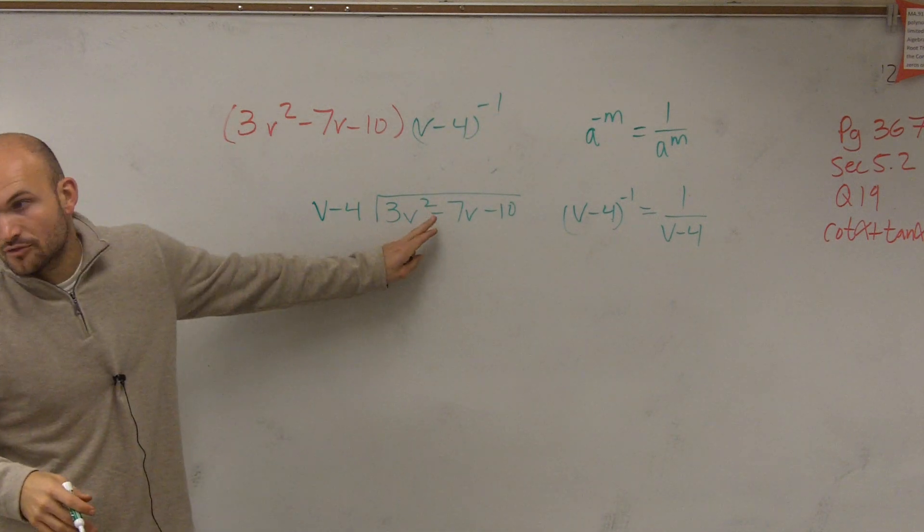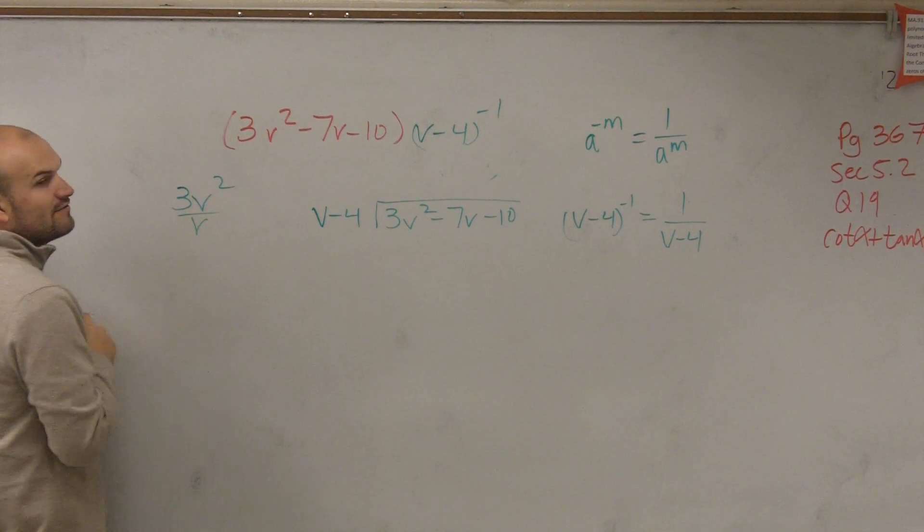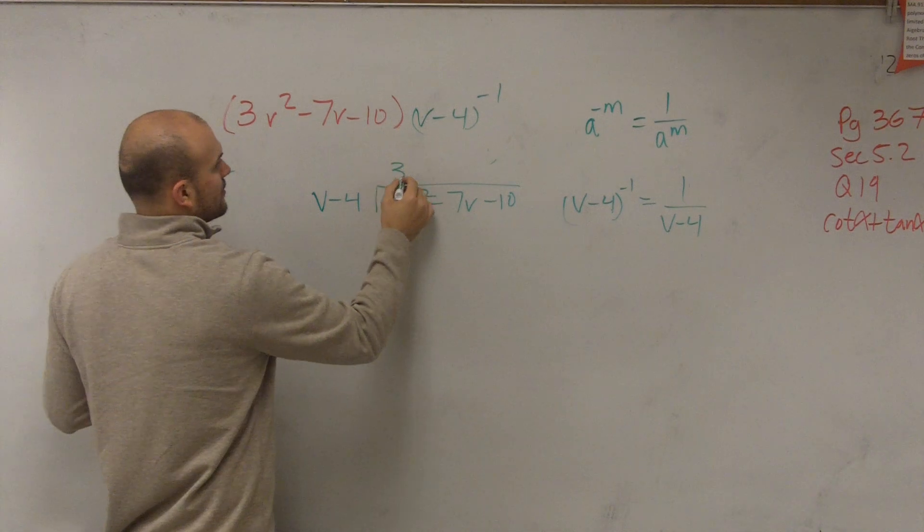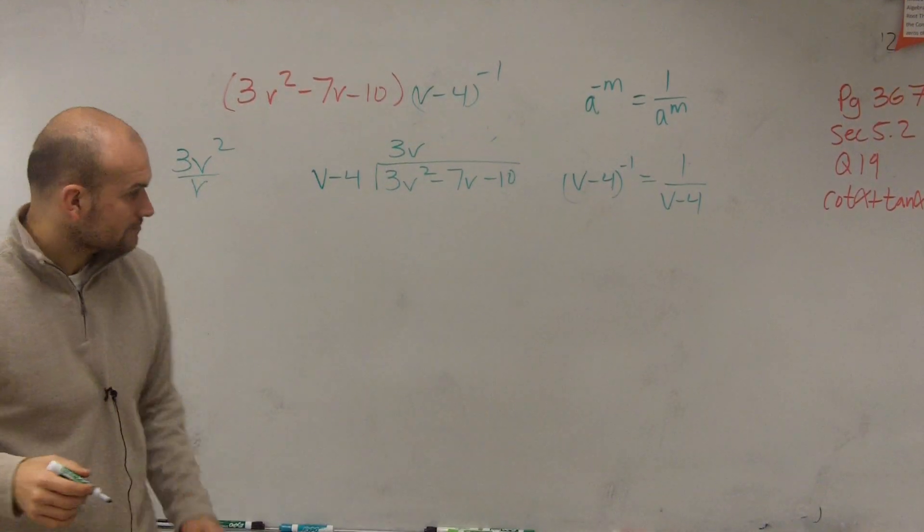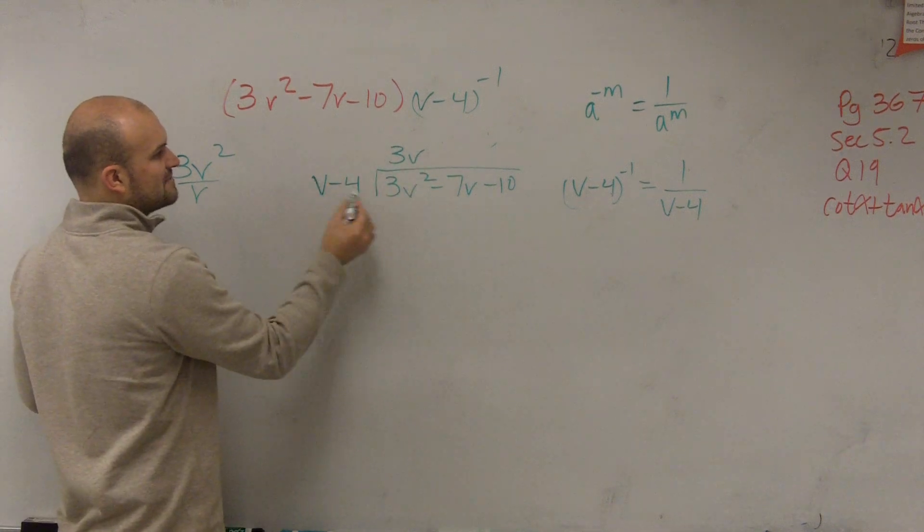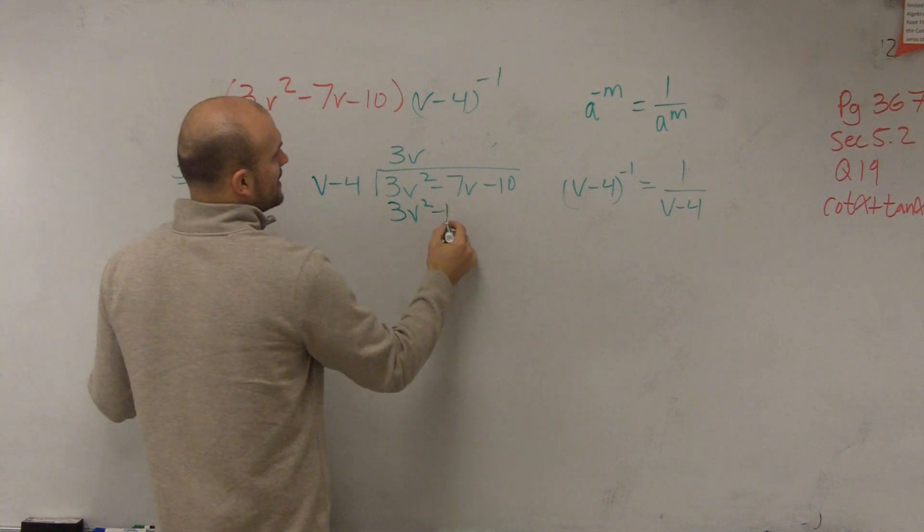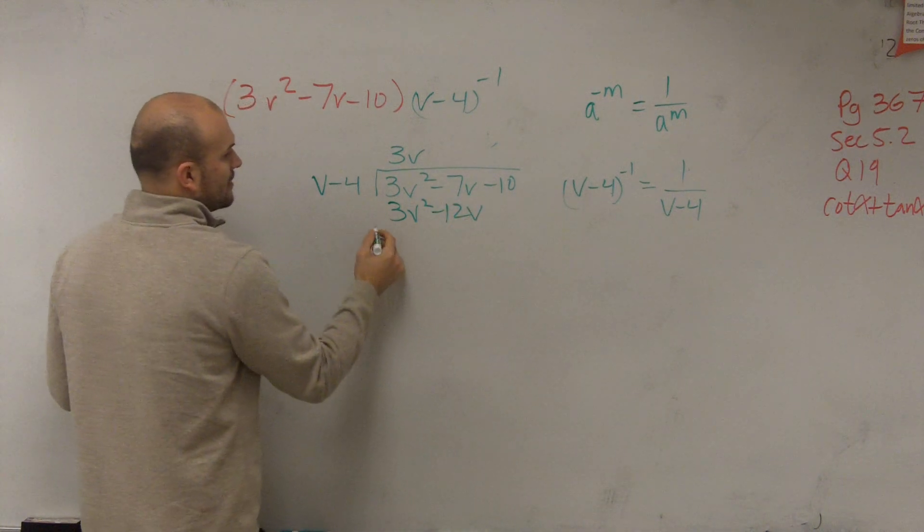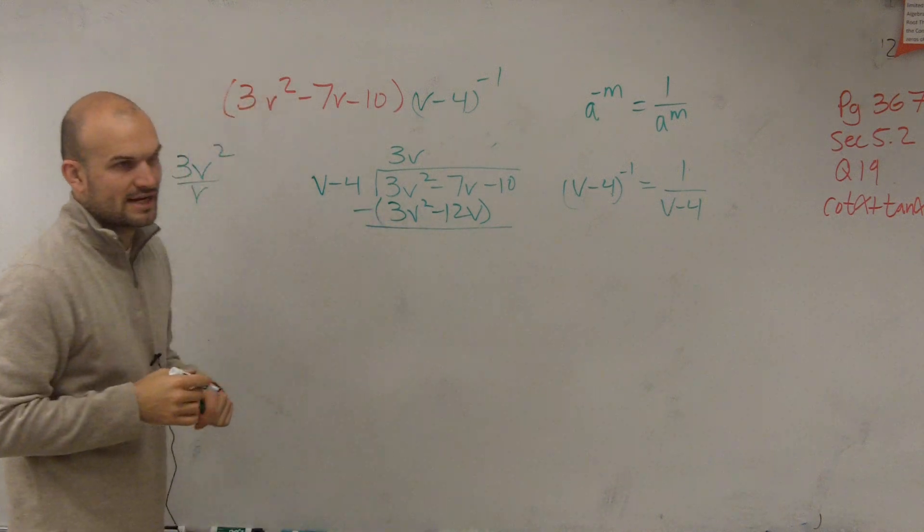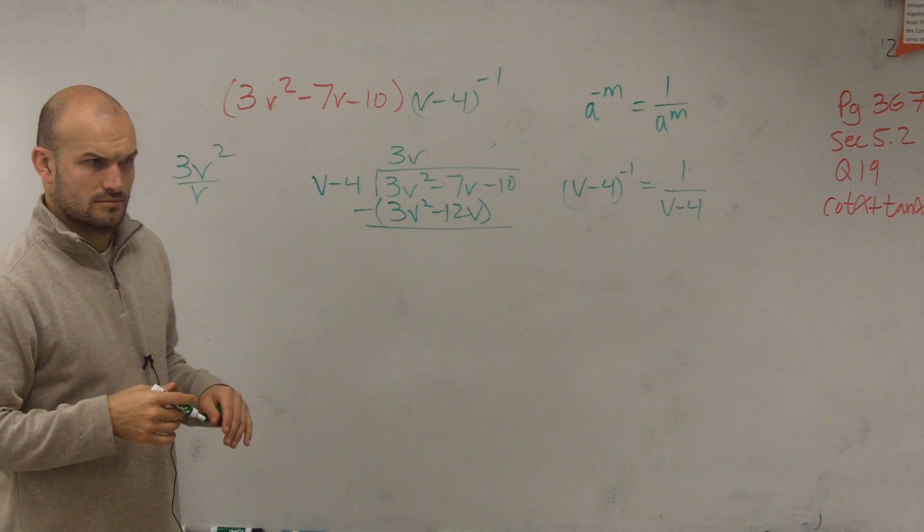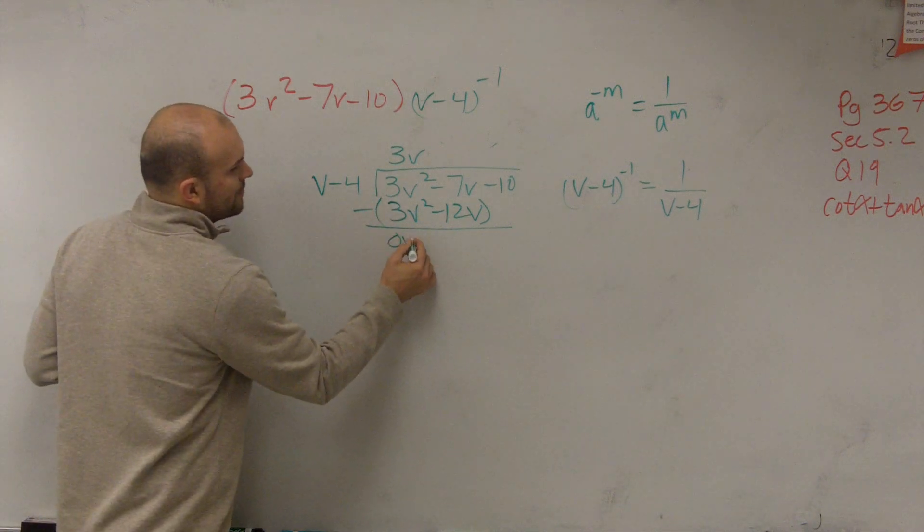So v divides into 3v squared minus 3v squared. So all you're really doing is 3v squared divided by v. Well, that's going to be 3v. You can check your answer. 3v times v is 3v squared. 3v times negative 4 is going to be a negative 12v. Then we put in parentheses and subtract the whole second row.